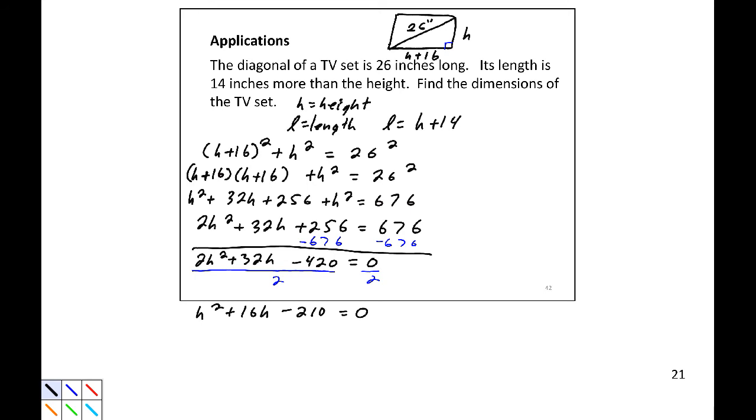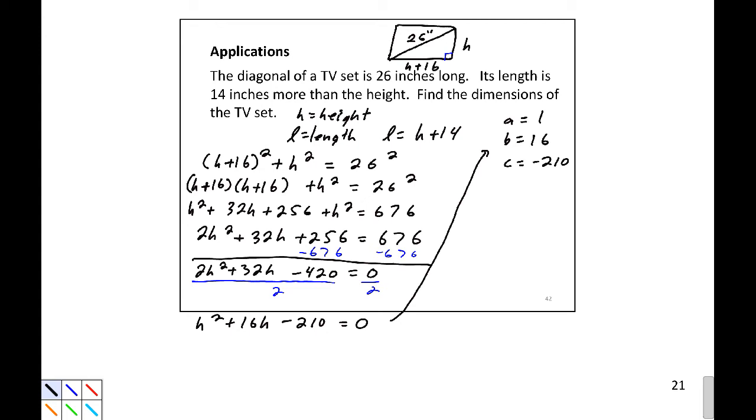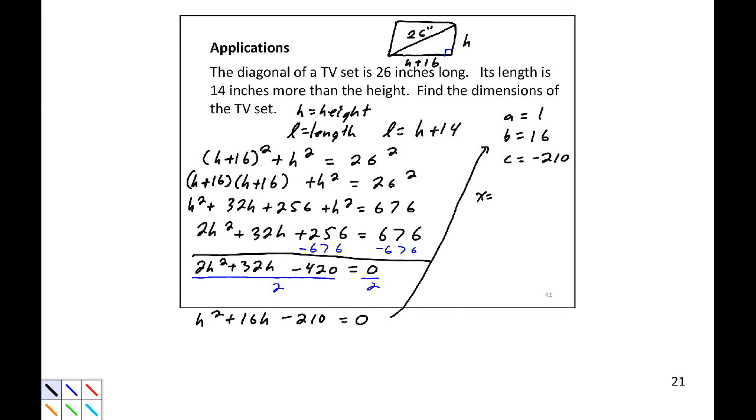I'm going to say a equals 1, b equals 14, and c equals negative 240. So negative b is negative 14, plus or minus square root of b squared minus 4ac. So negative 14 plus or minus the square root of 196 plus 960, all divided by 2 times 1.